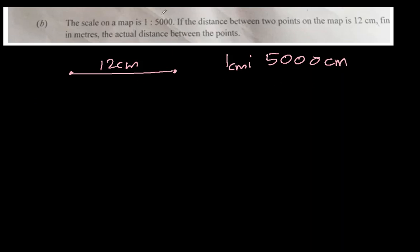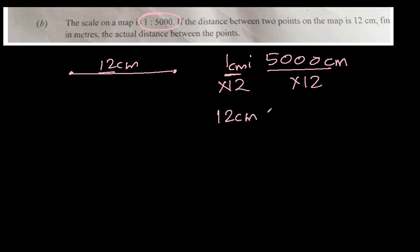Look at the ratio — there is no unit given, because whatever unit we write on one side, the same unit is written on the other. So if 1 centimeter equals 5000 centimeters, then for 12 centimeters we multiply both sides by 12. That gives 12 centimeters equivalent to 60,000 centimeters. But this is the logical way; you can't present it this way in exams.